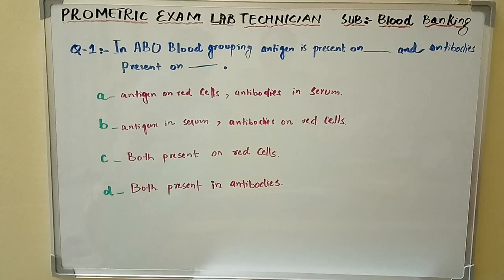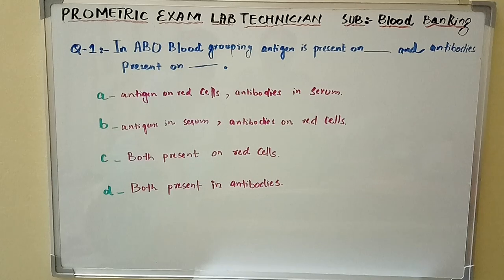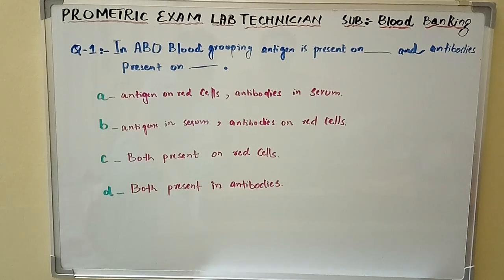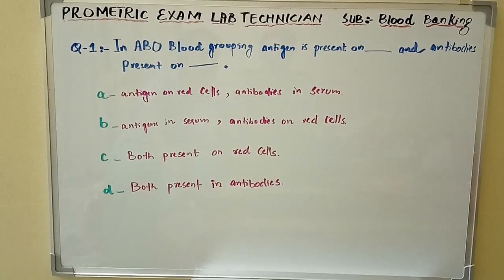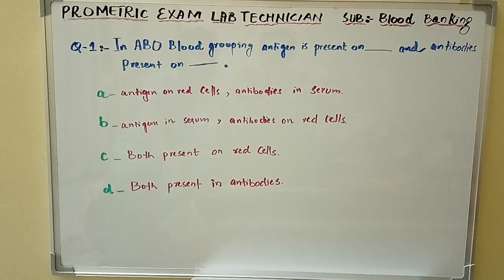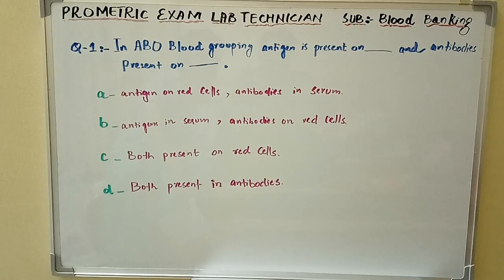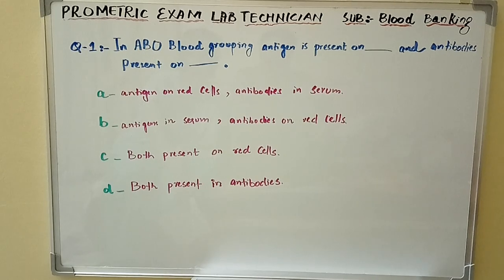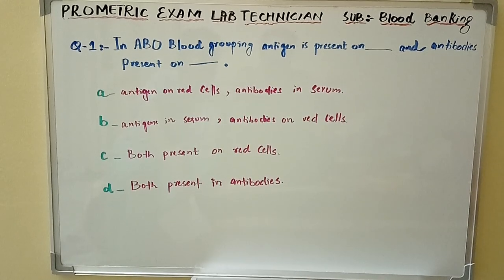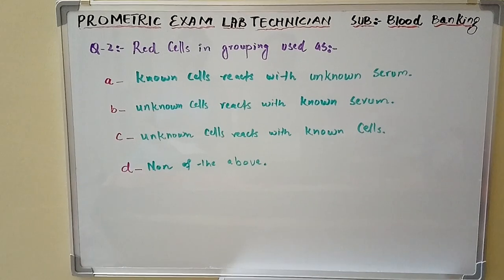Question number one: In ABO blood grouping, antigen is present on dash and antibodies present on dash. Option A: antigen on red cells, antibodies in serum. Option B: antigens in serum and antibodies on red cells. Option C: both present on red cells. Option D: both present in antibodies. Question number two: Red cells in grouping are used as?